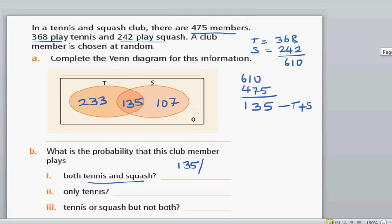135 out of 475. So you can simplify that, and that simplifies to 27 over 95. You can use a calculator to simplify that.